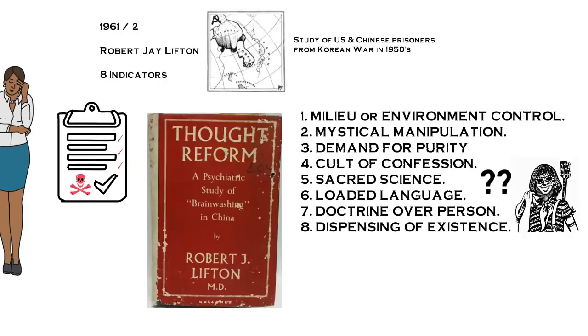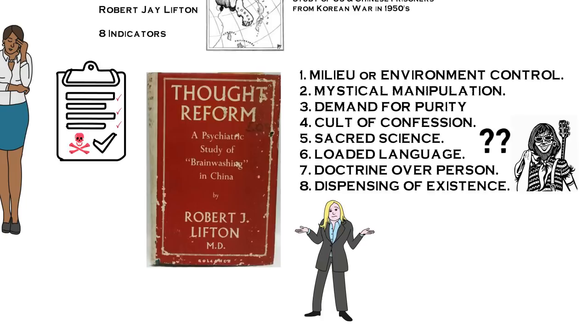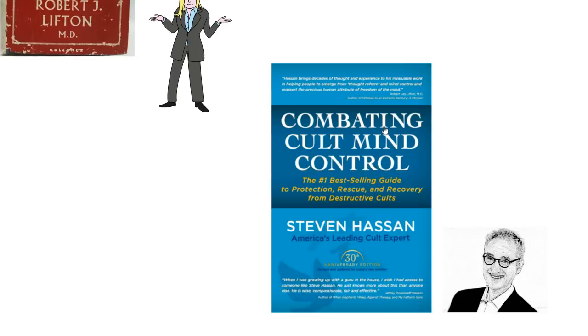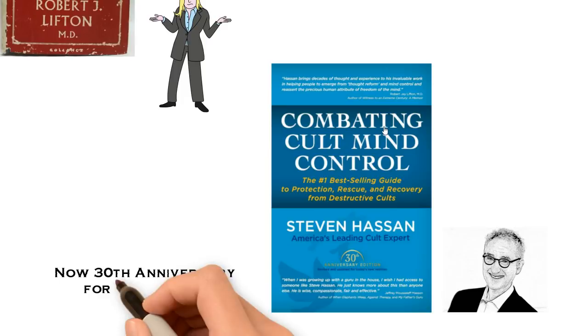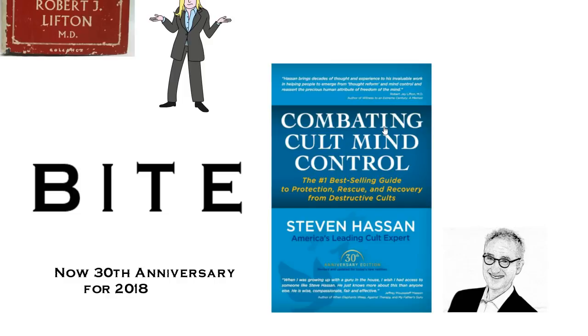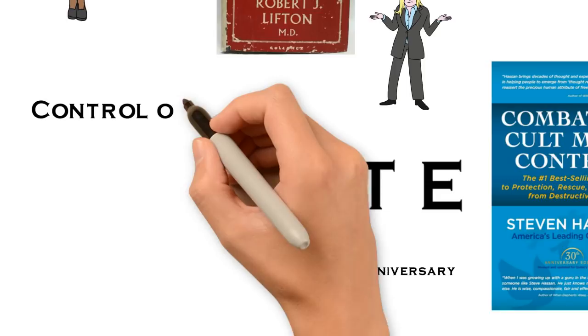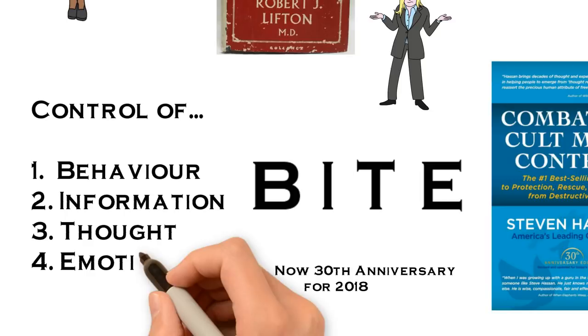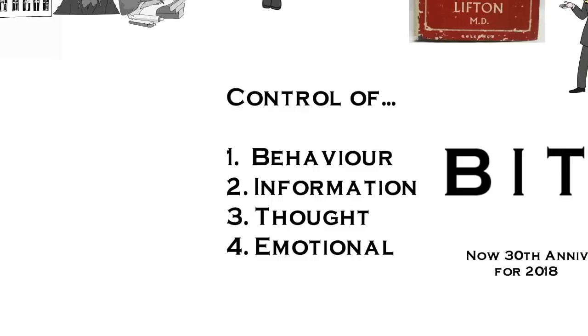That language, maybe those words don't mean a lot to you—maybe they're a little bit dated and it's possibly quite difficult to grasp exactly what he means without reading the book. But fast forward to 1988: Steve Hassan, himself a former Moonie cult member, published a best-selling, widely acclaimed book called 'Combating Cult Mind Control,' which has been reprinted often and recently updated to its new 30th anniversary edition. In the book, Steve breaks it down into a model he calls the BITE (B-I-T-E) model. We're going to take a look at that now and select the key indicators from each of the categories: Behavior control, Information control, Thought control, and Emotional control.